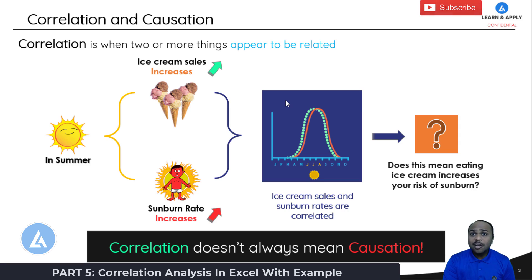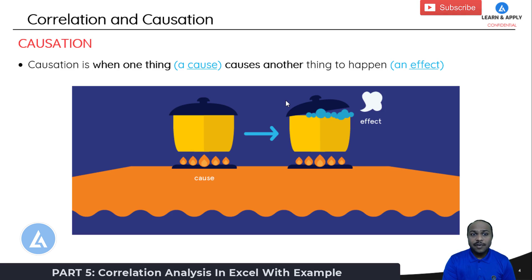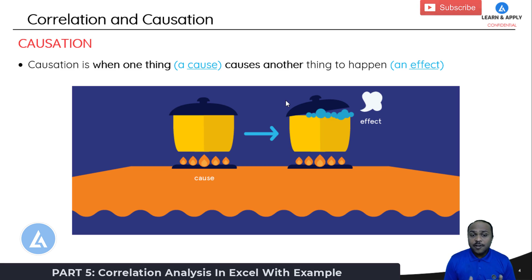Now what is causation? Causation is when one thing causes another thing to happen — there is a cause and effect relationship between two things, meaning one thing is the effect of another. For example, in the picture we are giving heat to a pressure cooker and after a certain time we can see steam is generated. Because we are giving heat to the pressure cooker, steam is generated. This is called causation.